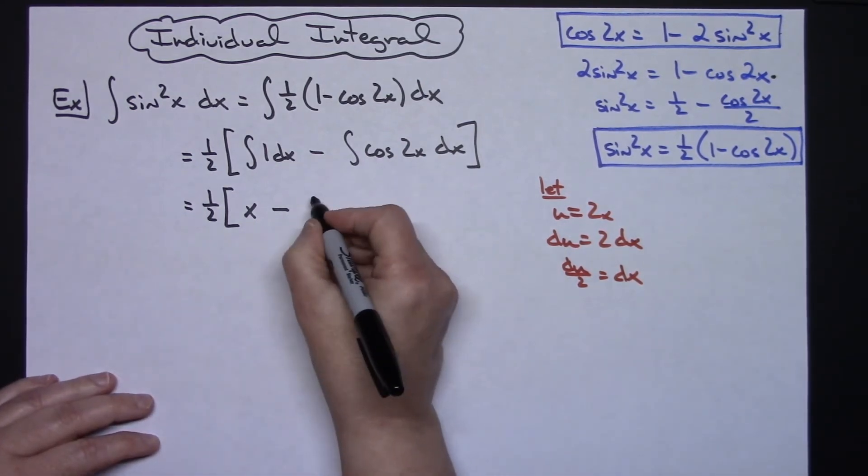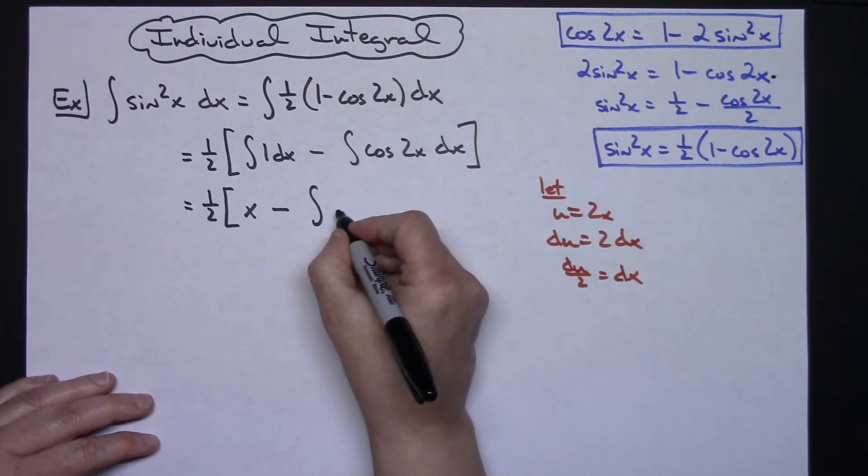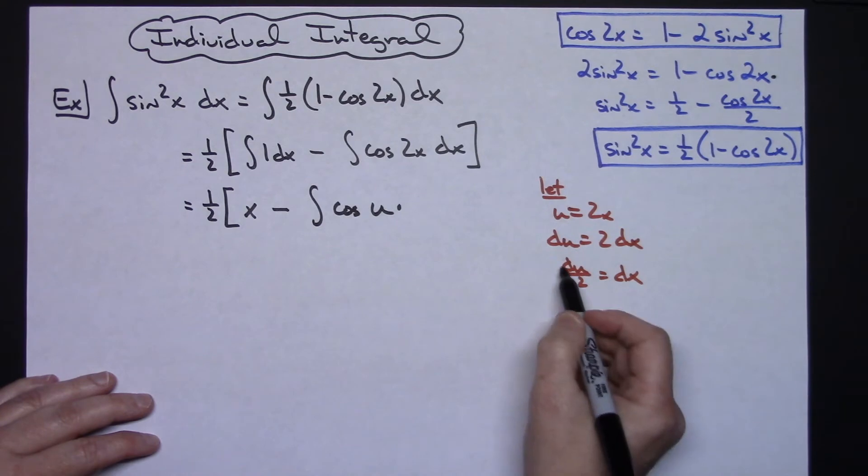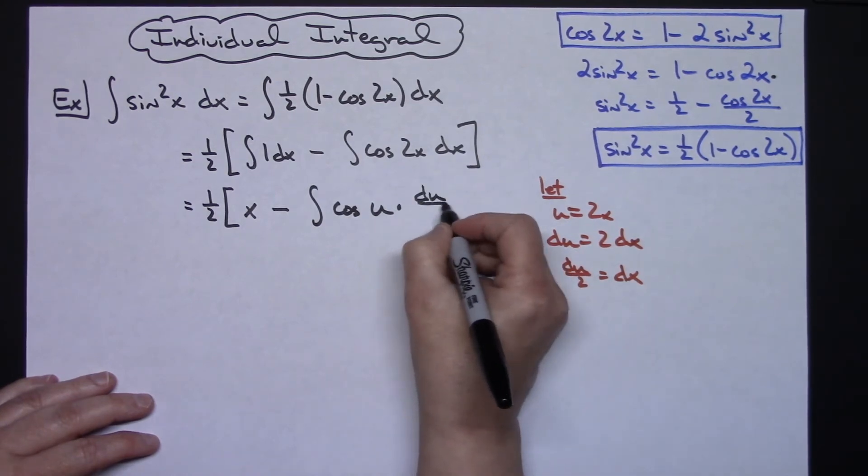So we can come up here and we can rewrite this integral. We'll have the integral of cosine u times, replacing dx with what it equals, I'll have a du over 2.